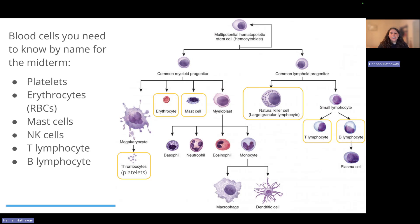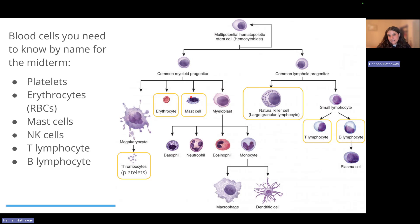The specific blood cells you need to know by name for this module are: thrombocytes, also known as platelets, involved in blood clotting; erythrocytes, also known as red blood cells; mast cells, which release histamine and cause allergies; natural killer cells, which are a type of lymphocyte; and T lymphocytes and B lymphocytes. Those are essentially the six types of blood cells to know specifically for pathophysiology.